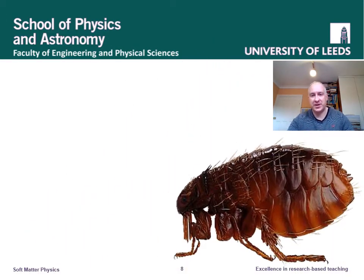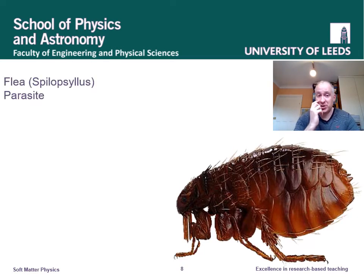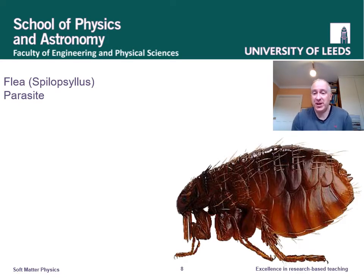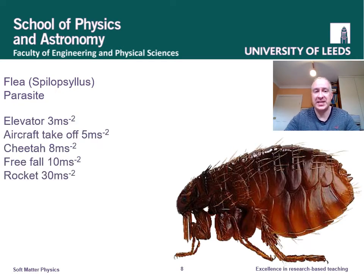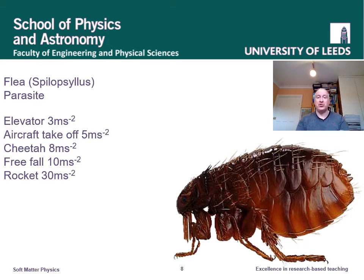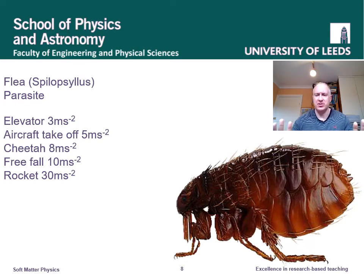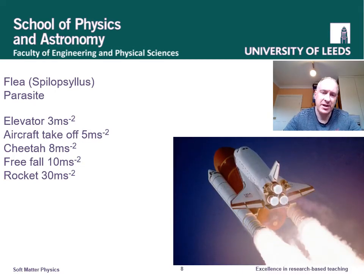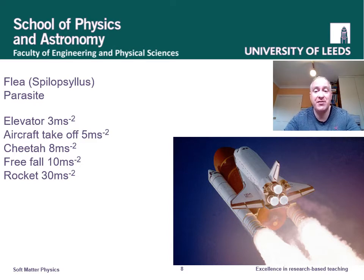Now here's an example of soft matter in nature — a flea. Fleas can jump, and when you jump you accelerate. Let's look at some acceleration examples in meters per second squared. In an elevator accelerating upwards: about 3. In an airplane pressing you to your seat: about 5. A cheetah, the world's fastest land animal: 8. Falling off a building: 10. Astronauts in a rocket at takeoff experience about 30 of these units, with their faces pulled back by massive g-forces.